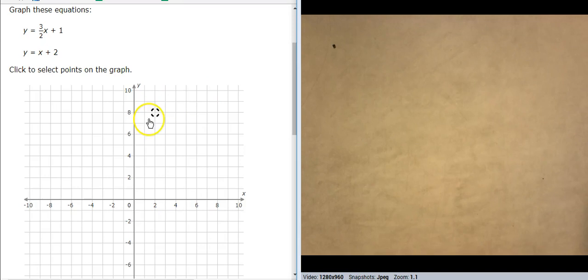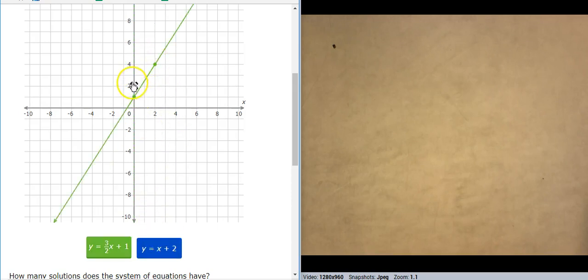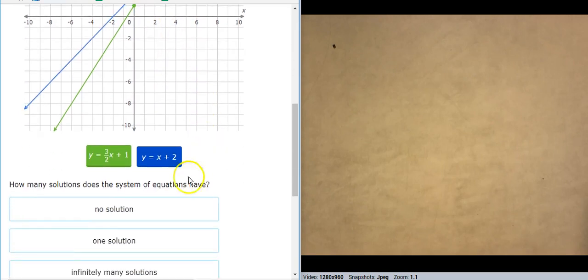All right, so let's graph these. These are both in slope-intercept form, so I'm going to start at one and go up three. One, two, three over two. First line. Second line, start at two. Go up one over one. That's going to be one solution.